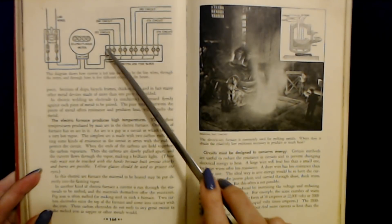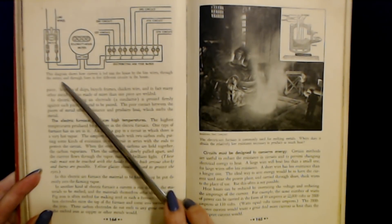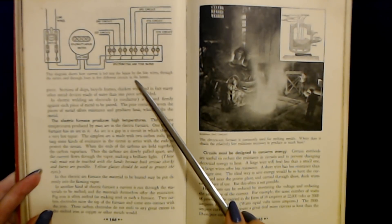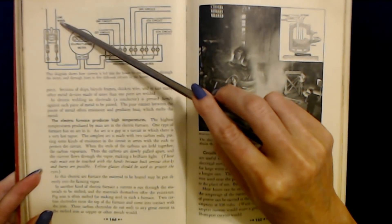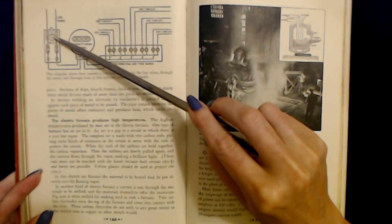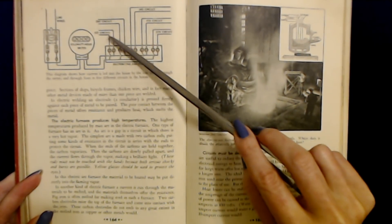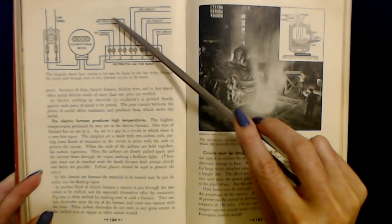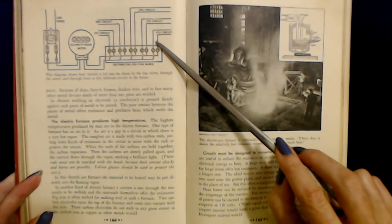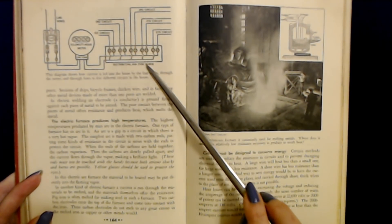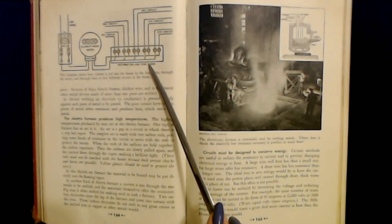This diagram shows how current is led into the house by the line wires through the meter and through fuses to five different circuits in the house. So you have your meter right here. Here are the line wires up here. They come down to this section. This is the cutout switch and they come up to here. You have your first circuit, second circuit, third circuit, fourth circuit, and the fifth circuit. And this is the distributing and fuse blocks. The distributing and fuse block.